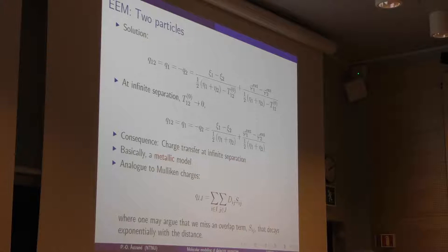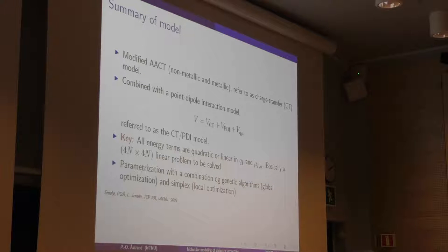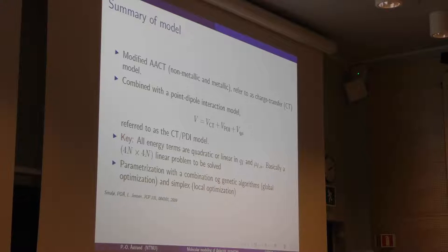We have reworked this model quite a bit, because it starts as a metallic model — it only works for metallic systems. The summary of our model is that we have a charge transfer model, a point dipole interaction model (a polarizability model), and a coupling between the different charges and dipoles that we solve. Mathematically, that is a 4n × 4n linear problem to be solved, which is of course much, much faster than doing a DFT calculation on a molecule.